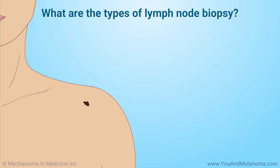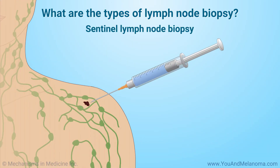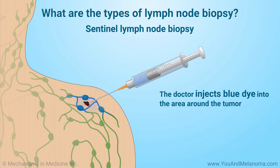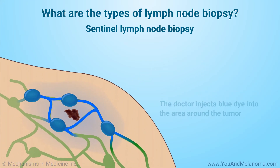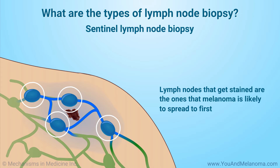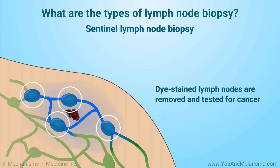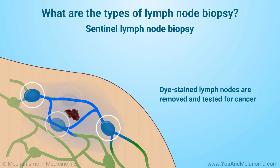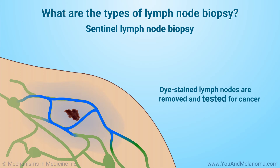In a sentinel lymph node biopsy, the doctor injects blue dye into the area around the tumor. The lymph nodes that get stained with dye are the ones that melanoma is likely to spread to first. The dye-stained lymph nodes are removed and tested for cancer.